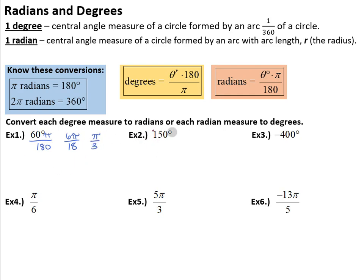Same thing for our next one. 150 degrees - we're going to multiply it by π and divide by 180. We can once again lop off the zeros by dividing by 10, and then 15 and 18 have a common divisor of 3. So 5π/6 radians.